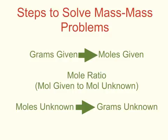Our steps for solving mass-mass problems is to go from the grams of what we're given to the moles of what we're given. The next step is to use the mole ratio, which is the moles of what we're given to the moles of what we're looking for, or our unknown. Finally, we convert from the moles of our unknown to the grams of our unknown. Let's take a look at how we use these steps to solve a problem.